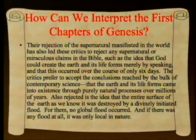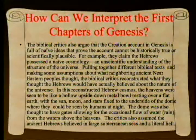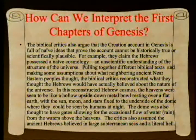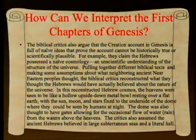Also rejected is the idea that the entire surface of the Earth was destroyed by a divinely initiated flood—for them, no global flood occurred, and if there was any flood at all, it was only local. The biblical critics also argue that the creation account in Genesis is full of naive ideas, claiming the Hebrews possessed a naive cosmology—an unscientific understanding of the universe. Pulling together different biblical texts and assumptions about ancient Near Eastern peoples, they constructed what they thought the Hebrews actually believed about the nature of the universe.